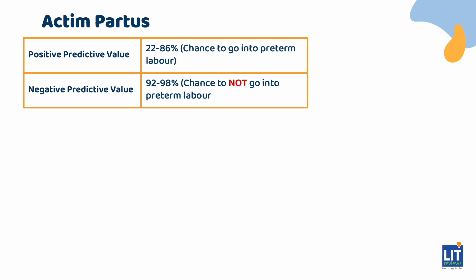Let's return to the actin partus test. For a patient at 33 weeks presenting with contractions, if the actin partus test is negative, there is a 92% to 98% chance that the patient will not go into preterm labour in the next 1 to 2 weeks. In other words, a negative actin partus test is reassuring. However, the positive predictive value of actin partus is only 22% to 86%, so a positive result does not confirm with certainty that the patient is in or will go into preterm labour. The key value of actin partus lies in its negative predictive value.